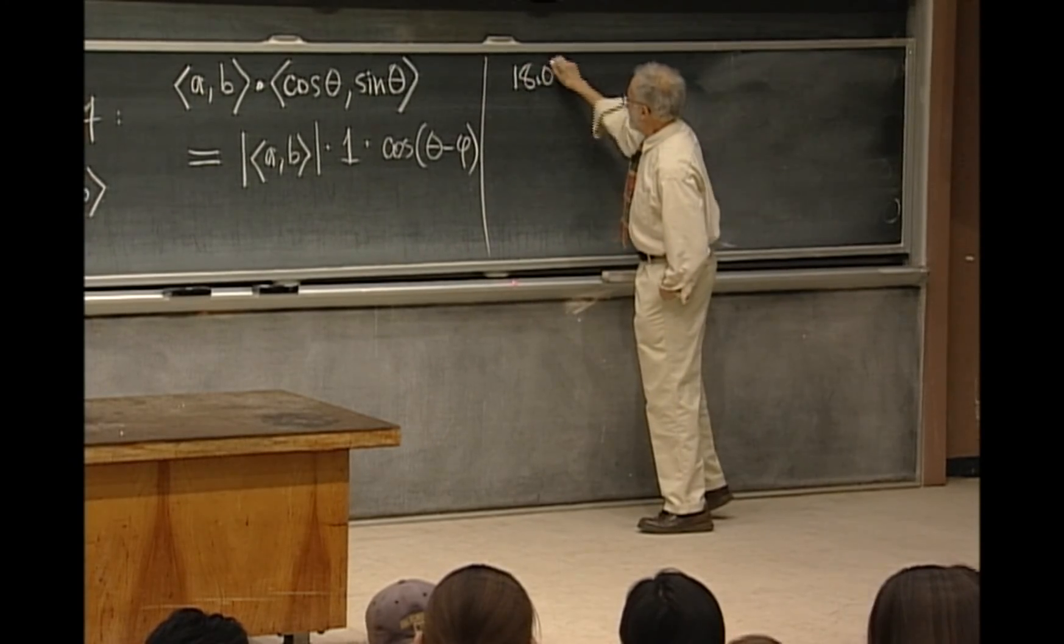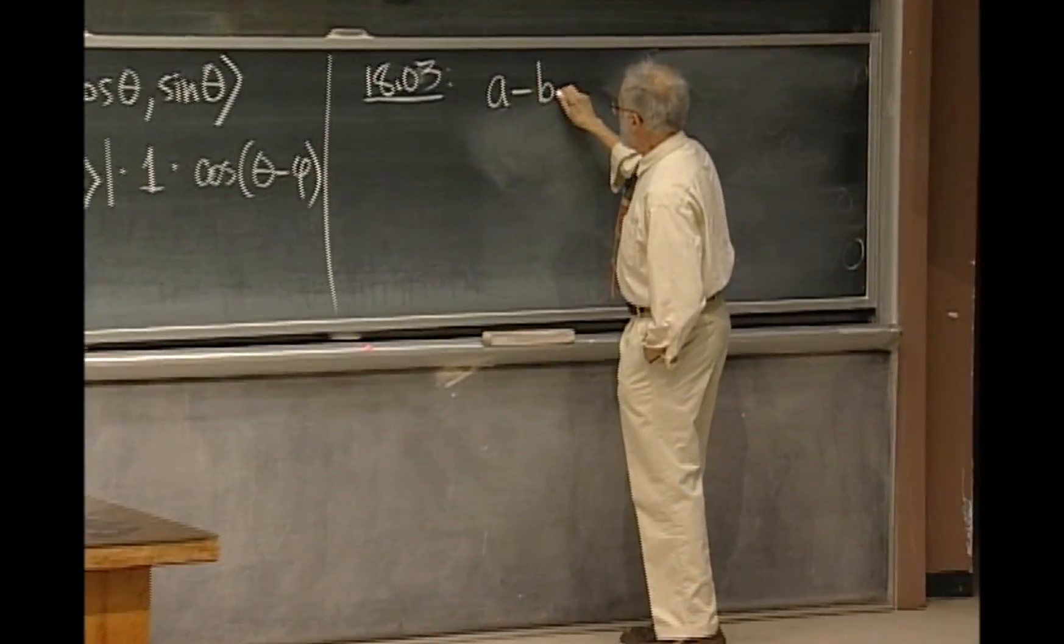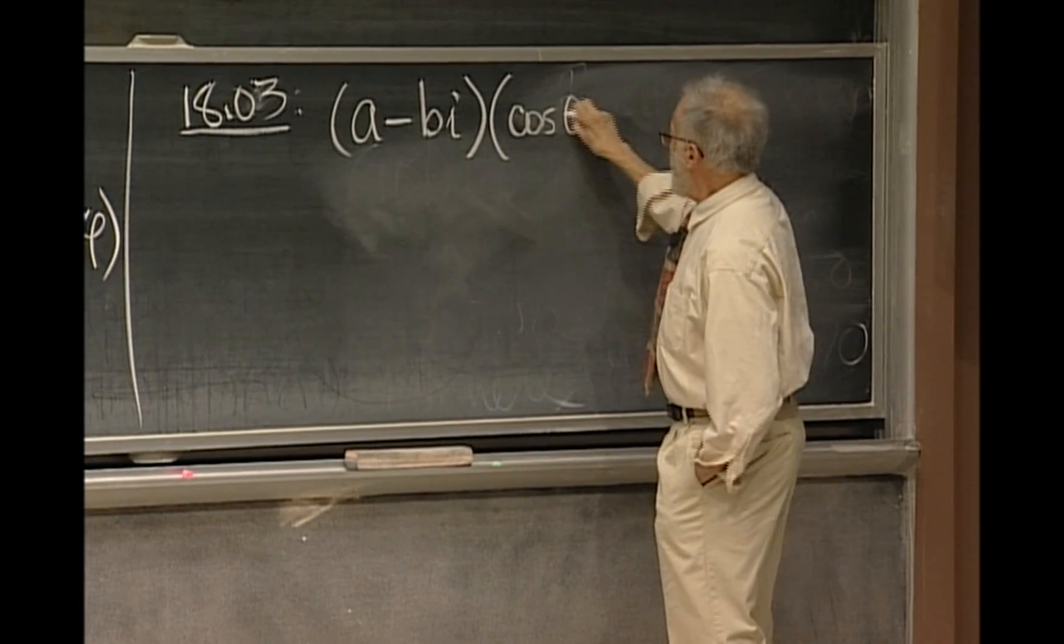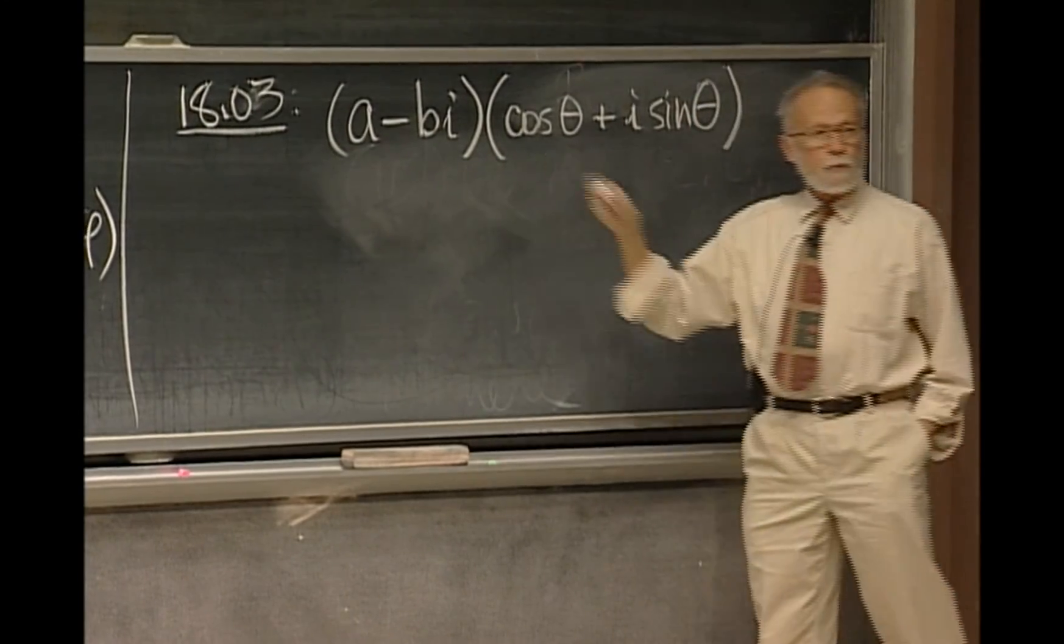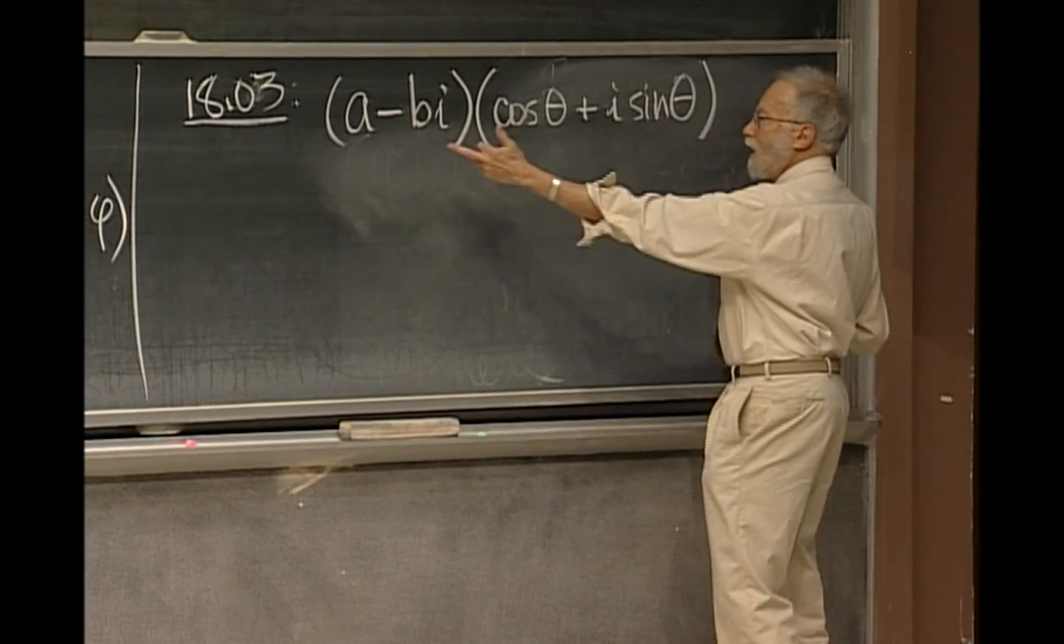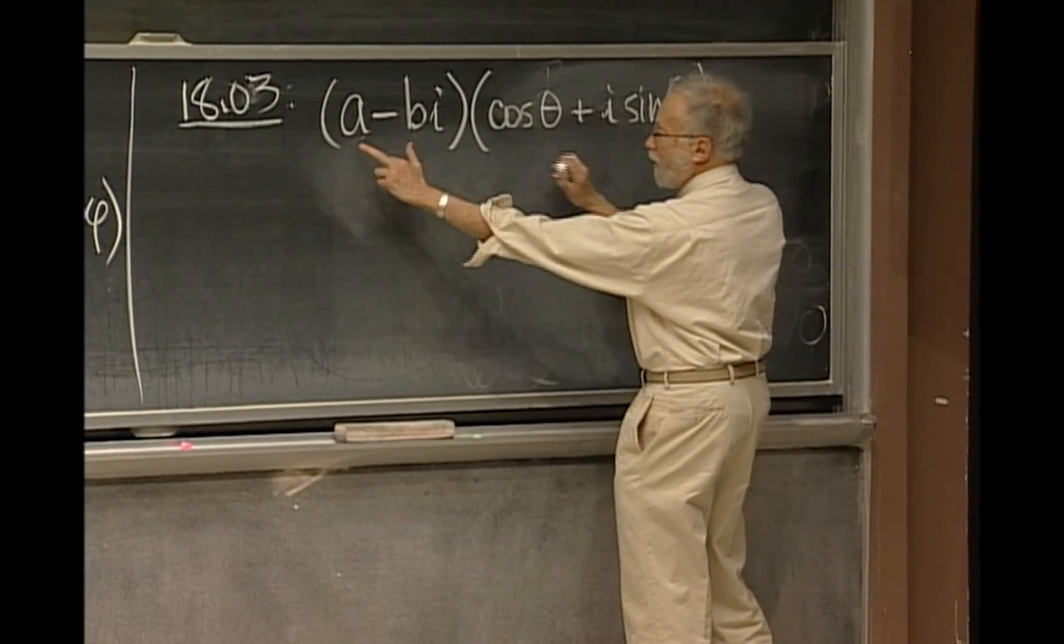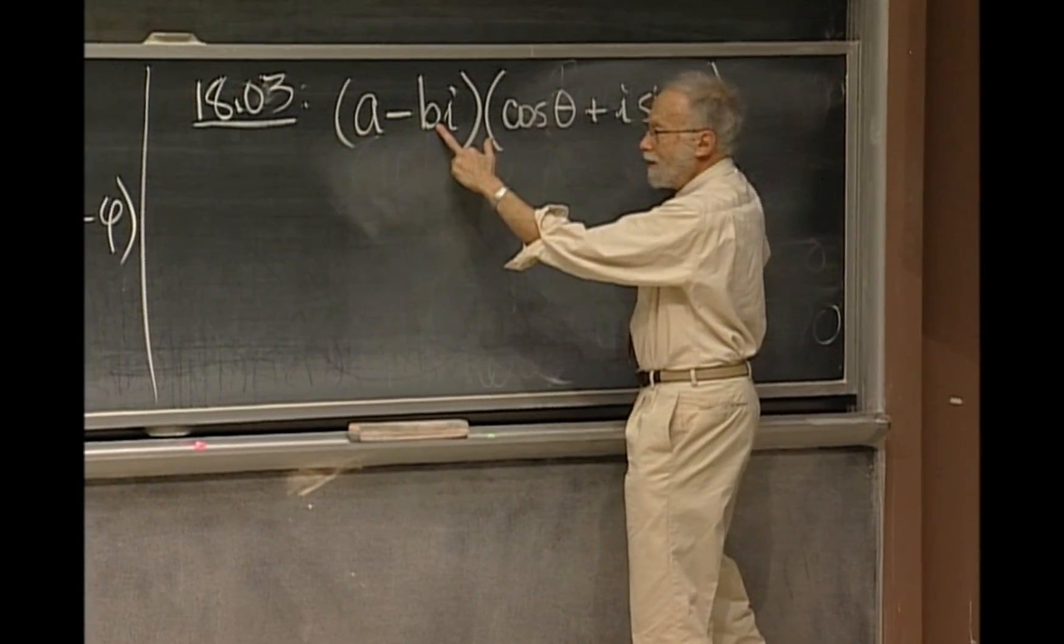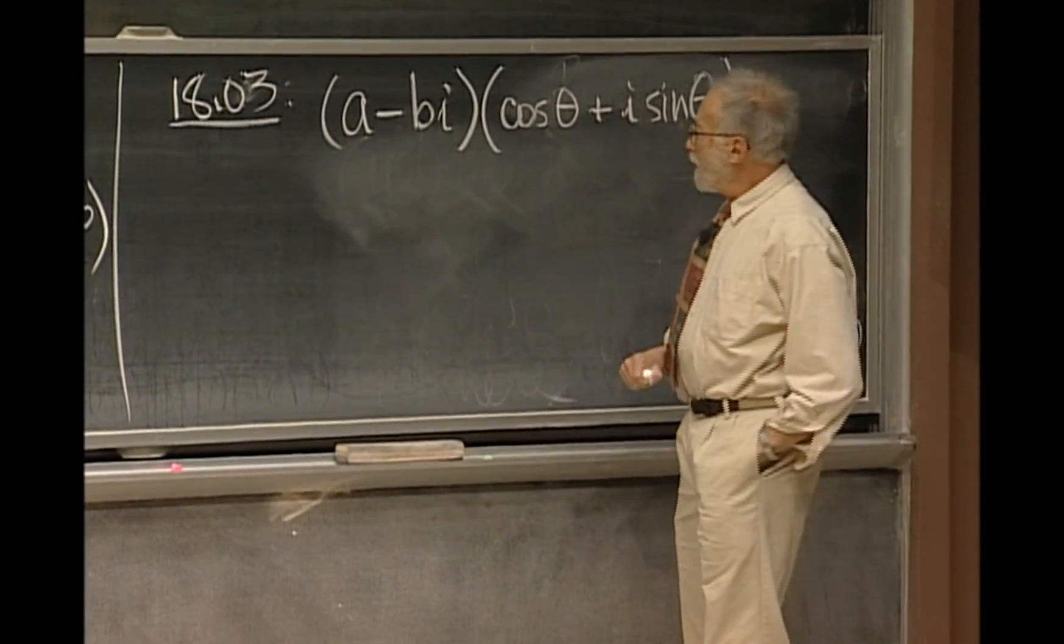So, the 1803 argument, really the complex number argument says, look, multiply together a minus bi and the complex number cosine θ plus i sine θ. There are different ways of explaining why I want to put the minus i there instead of i. But the simplest is because I want, when I take the real part, I want to start to get the left hand side. I will. If I take the real part of this, I'm going to get a cosine θ plus b sine θ because of negative i and i make one, multiplied together.